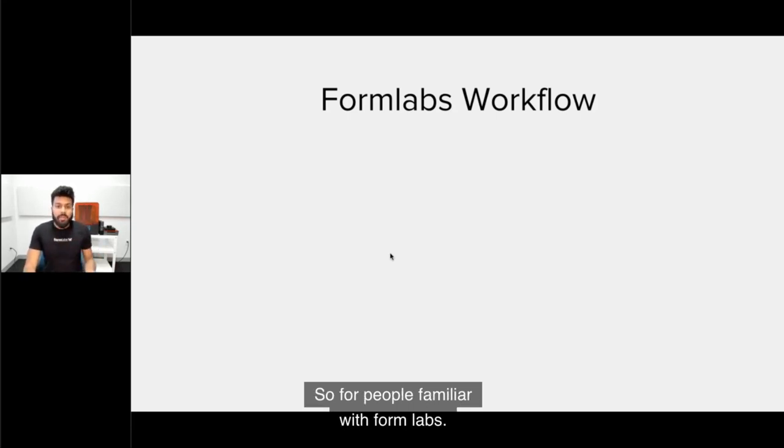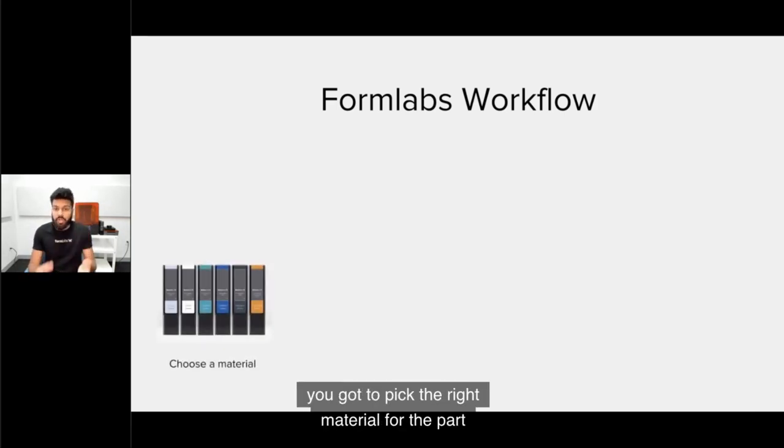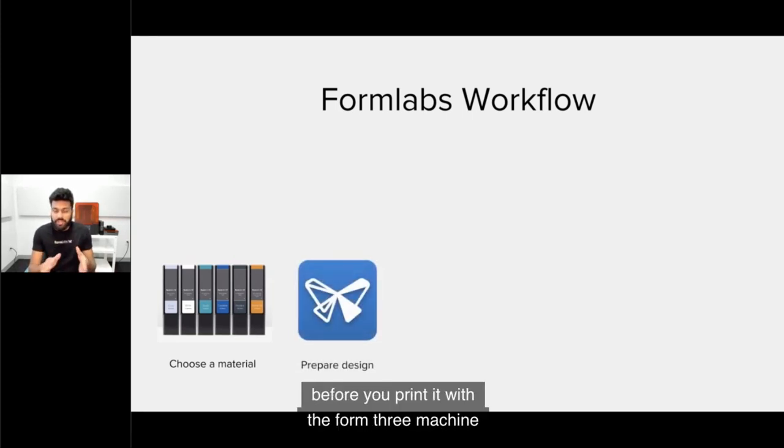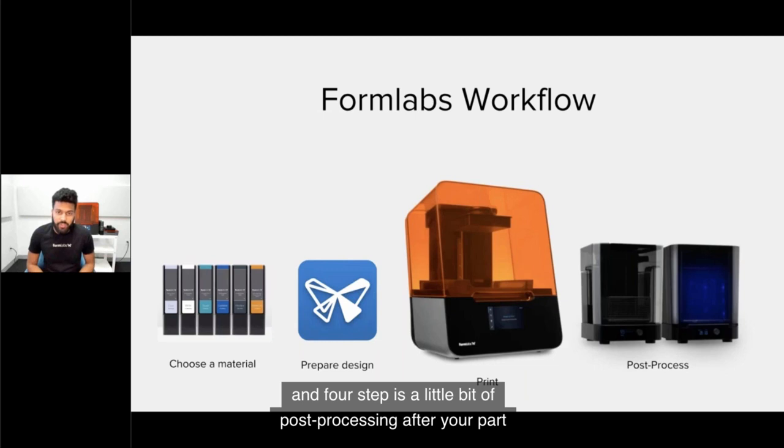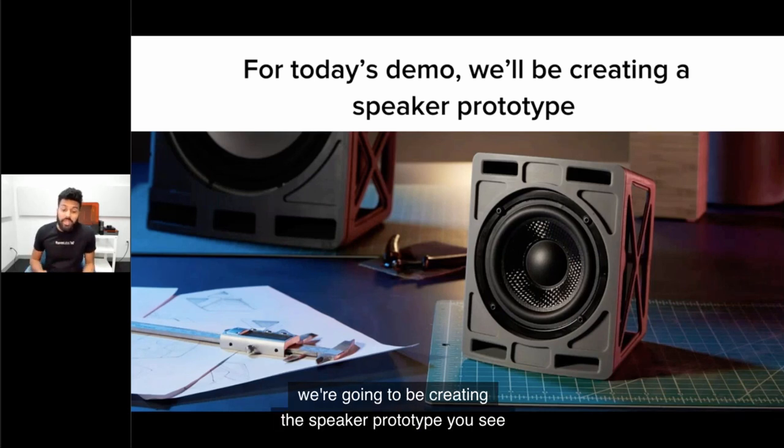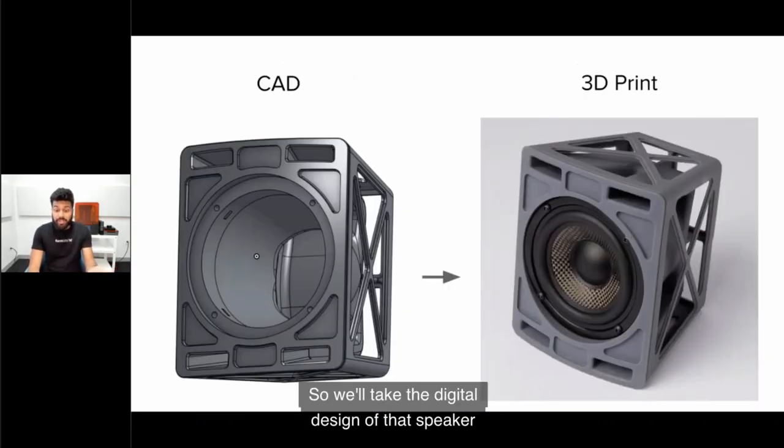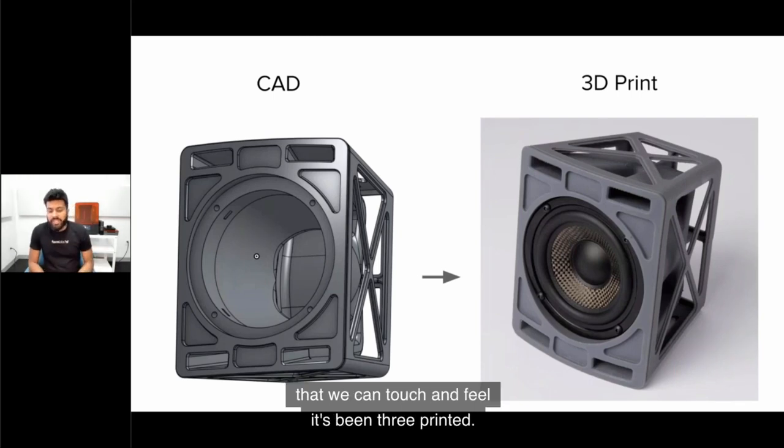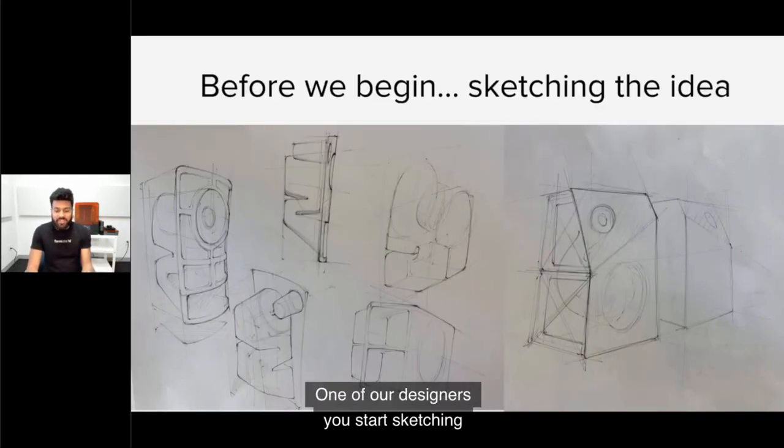For people familiar with Formlabs, if you have a Form 2, you're going to see a lot of similar steps in the workflow with the Form 3. But we're also going to cover some of the exciting key differences. First step is choosing a material. Second step is prep phase before you print. Third step is printing on the Form 3. Fourth step is post-processing after your part comes out. For today's demonstration, we're going to be creating the speaker prototype you see in this picture.